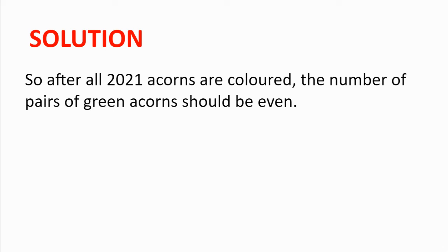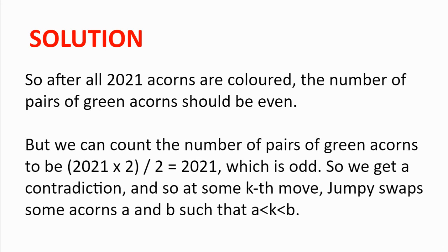But this is where we get our contradiction, because we can count the number of pairs of green acorns after all 2021 acorns are coloured green. This is 2021 multiplied by 2, since each acorn is paired with two other acorns, divided by 2, since we've counted each pair twice, to get 2021, which is odd. So we get our contradiction, and so at some kth move, Jumpy swapped some acorns a and b such that a is less than k is less than b.